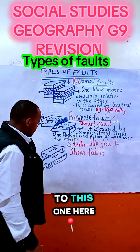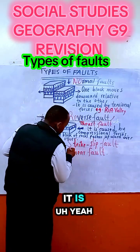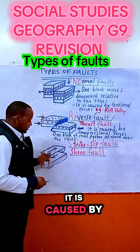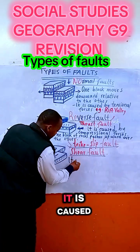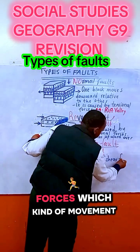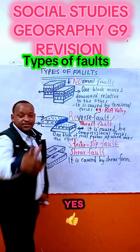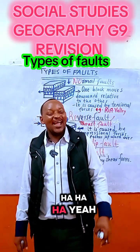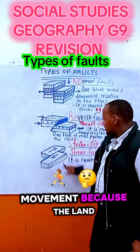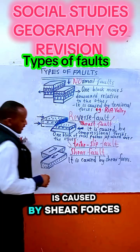So let's go to the shear or strike-slip fault. In this fault, it is caused by shear forces. Which kind of movement is this — is it vertical or horizontal? It is horizontal movement, because this block is moving opposite to the other one. So it is caused by shear forces.